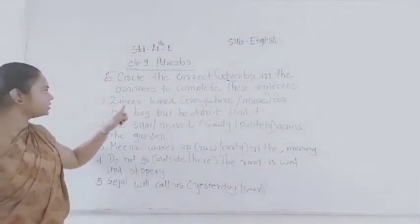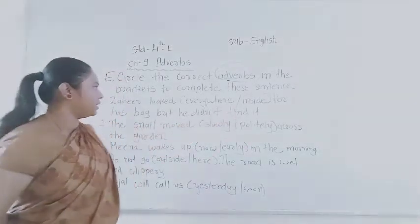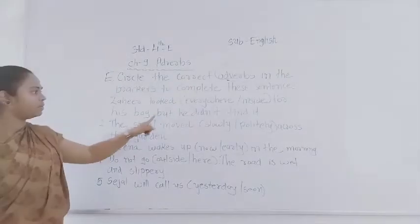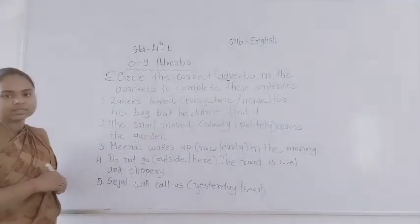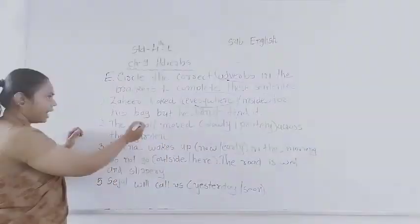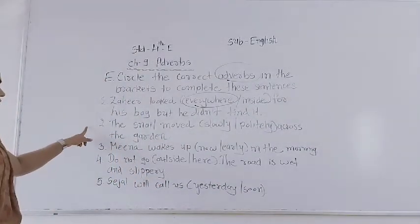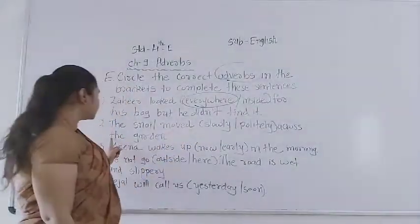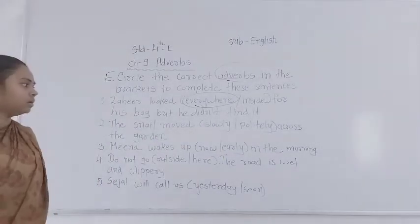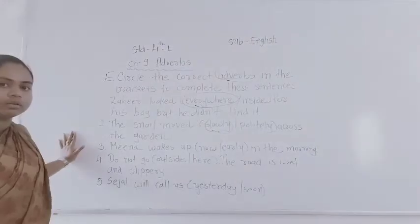First one: Jahid looked everywhere for his bag but he didn't find it. The answer is 'everywhere.' Second one: The snake moved slowly across the ground. The answer is 'slowly.'